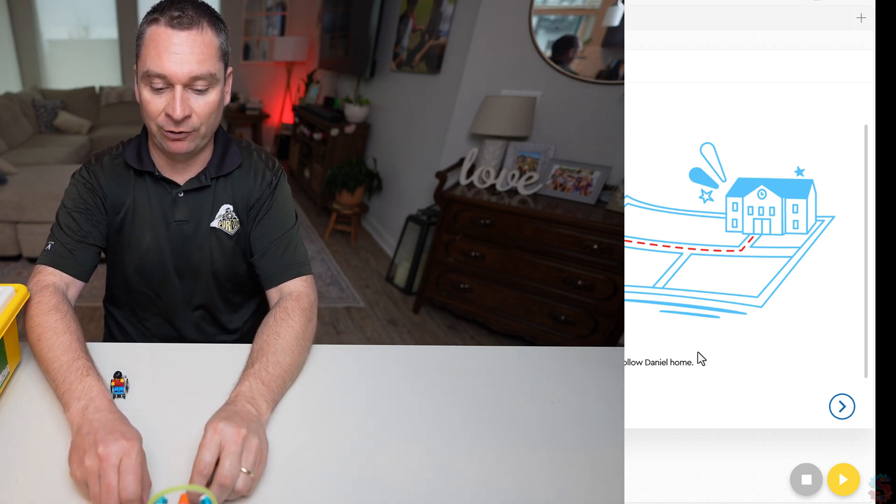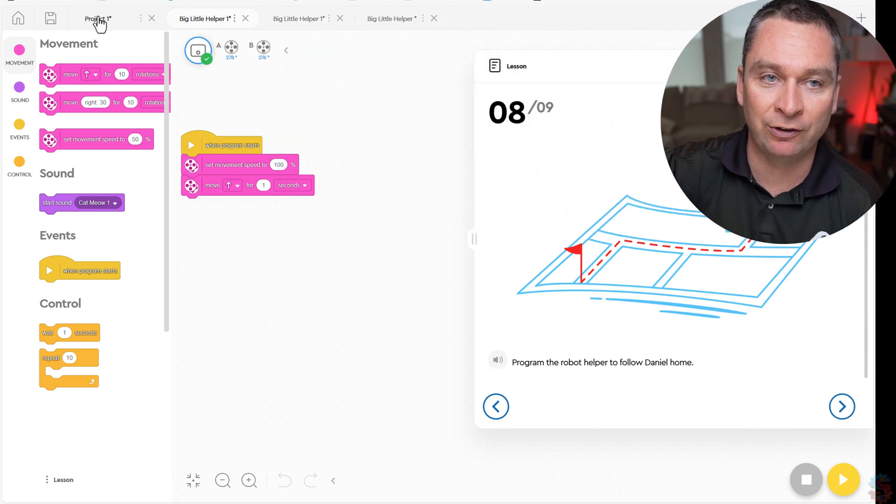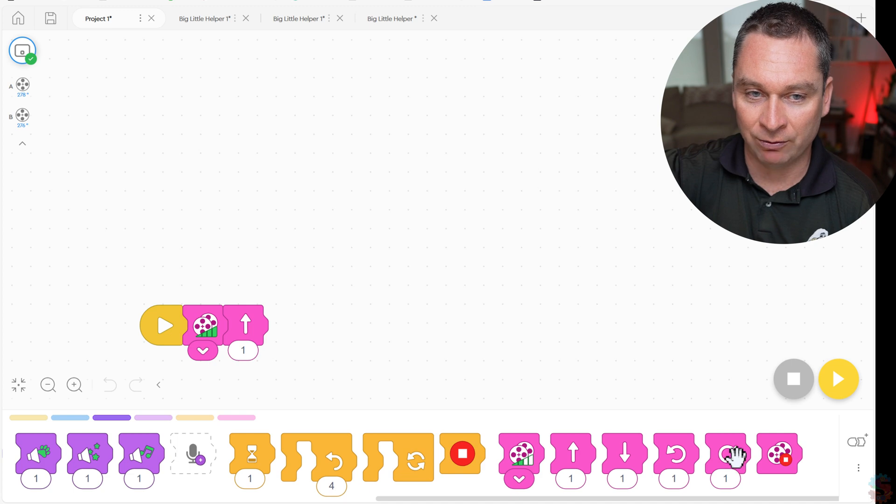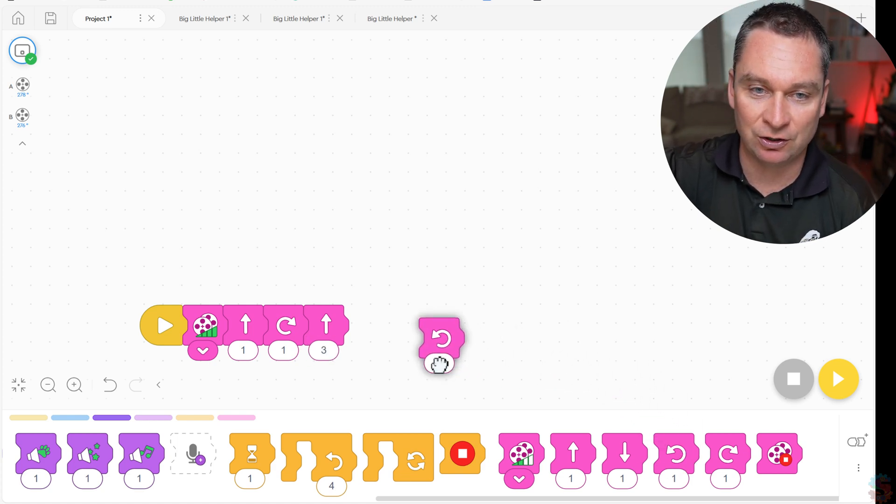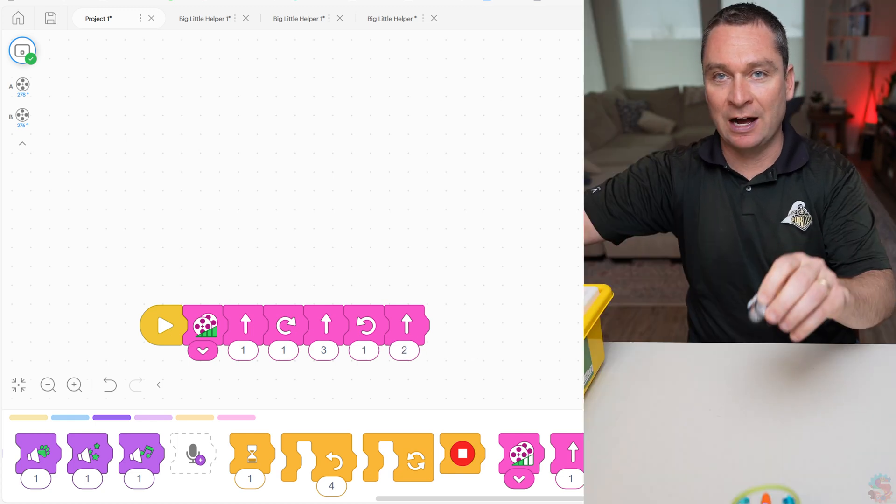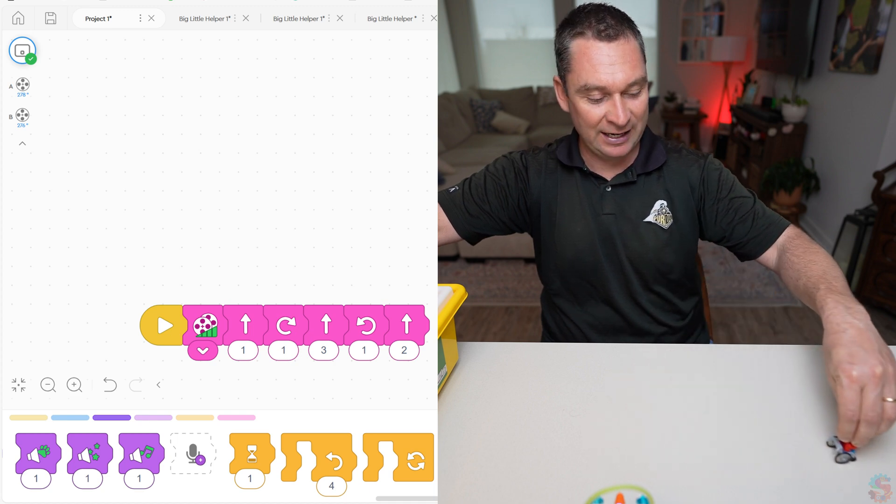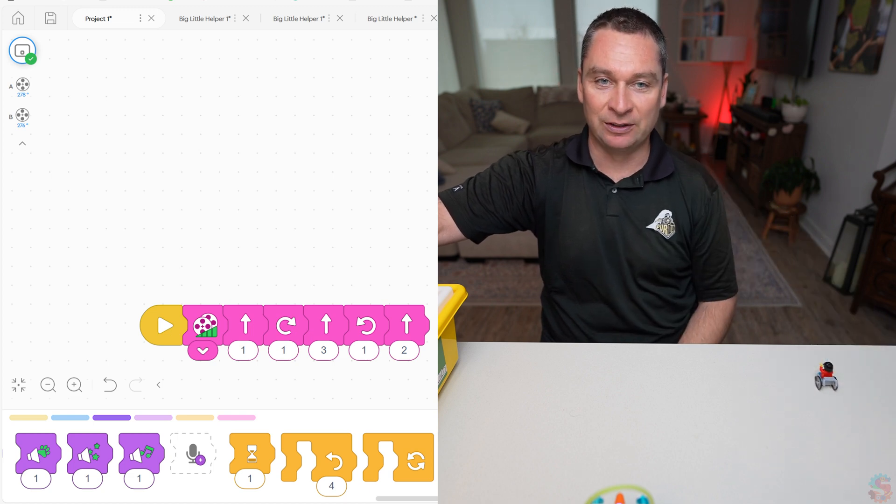So I'm going to set my robot so it's facing me, so it matches where that school is. And I can use icon blocks to do this easily because there is a right turn button, and then I want it to drive forward, let's say, three rotations. Then I want it to turn left, and then I want it to go forward two rotations. Let's see if this follows Daniel home. So Daniel's going to go forward, he's going to turn right, he's going to drive this way, he's going to turn left, and then drive forward. Can your bot follow Daniel home?